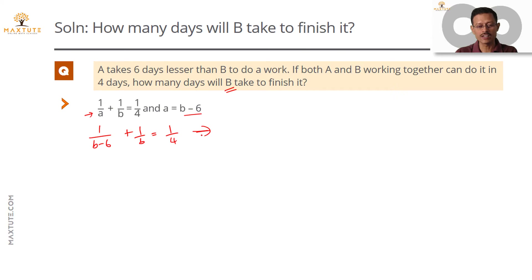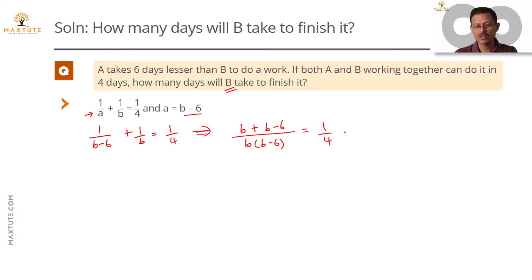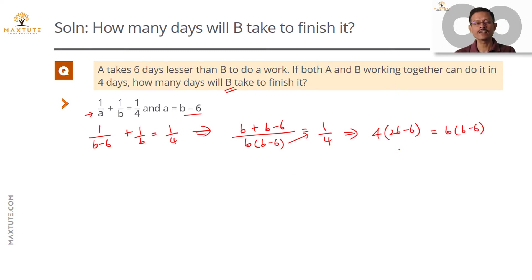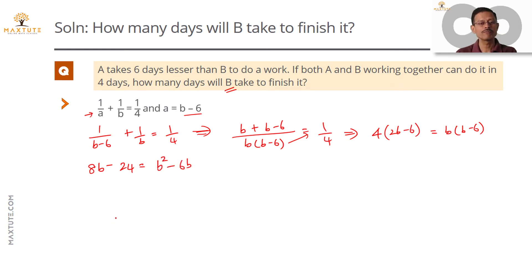Let's take B times (B minus six) as the common denominator. The left-hand side numerator becomes B plus (B minus six), giving two B minus six, all over B(B minus six), equal to one by four. Cross-multiplying, the left side gives four times (two B minus six), and the right side becomes B times (B minus six). Expanding: eight B minus twenty-four equals B squared minus six B. Take all terms to one side.